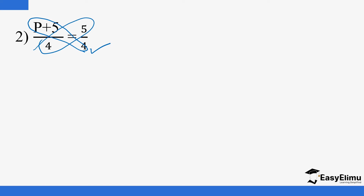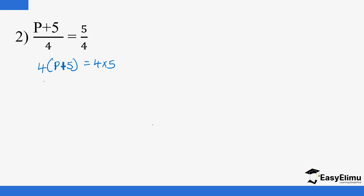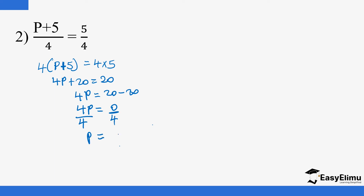It is normally more convenient to start with the diagonal containing the variable. So that is 4 into (P plus 5), and this equals 4 by 5. Opening up this bracket: 4 by P is 4P, and 4 by 5 is 20. On the other side we also have 20. So 4P equals 20 minus 20. This 20 taken to the other side becomes minus, so 4P equals zero. Dividing both sides by 4, P equals zero.